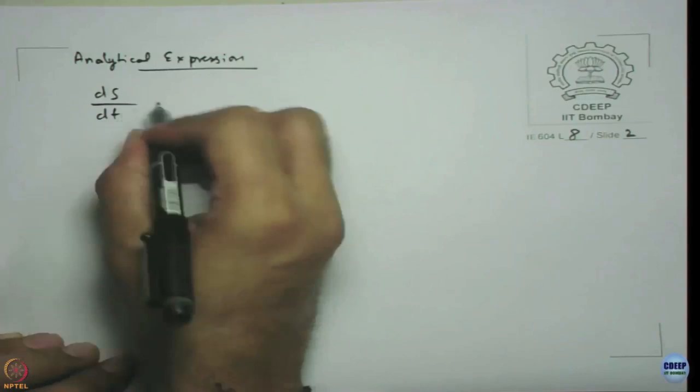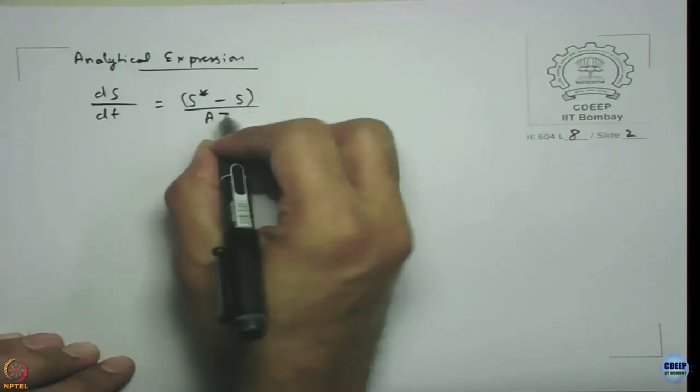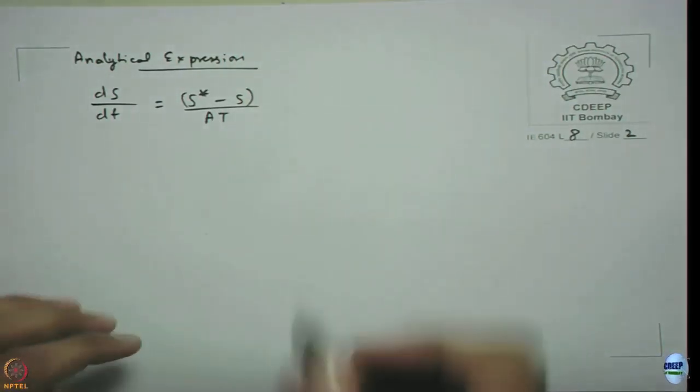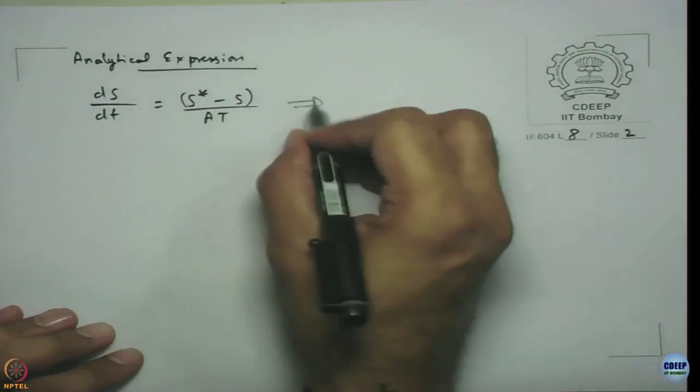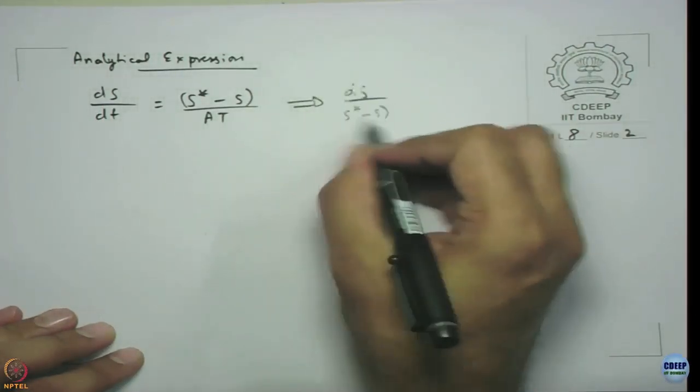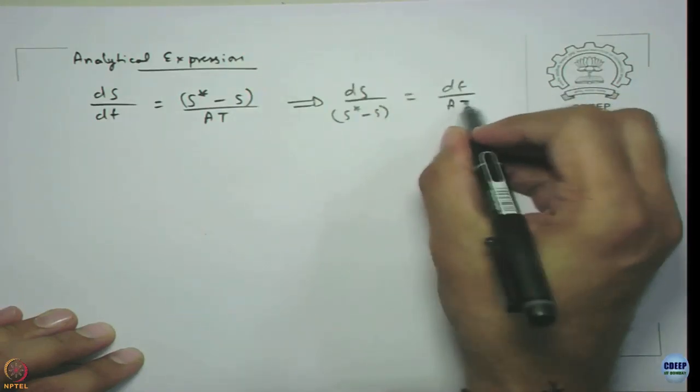The underlying equation is ds/dt = (s* - s)/AT, where s* is the goal, s is the stock, and AT is adjustment time. This is what we already have. Let us follow the same scheme: ds/(s* - s) = dt/AT.